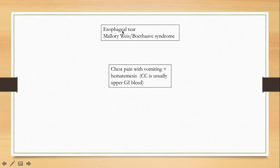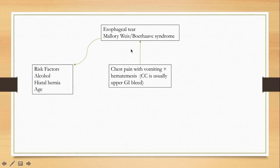This is usually a mucosal tear — not a through-and-through tear. The chest pain is due to mucosal disruption and will be severe. There will be vomiting preceding the chest pain in both situations, and there is some blood. These patients usually present with upper GI bleed as the chief complaint, with chest pain as a secondary complaint.